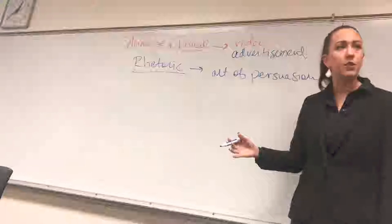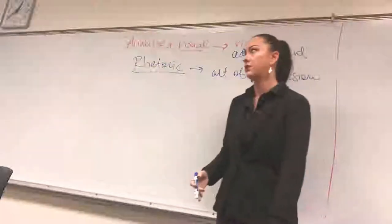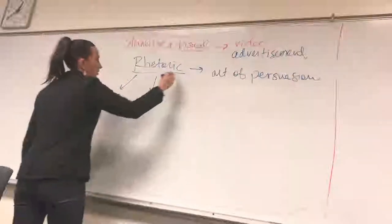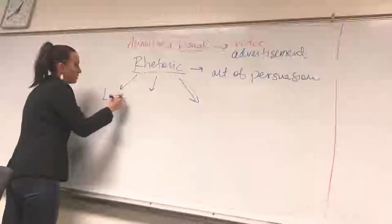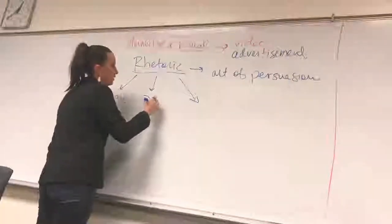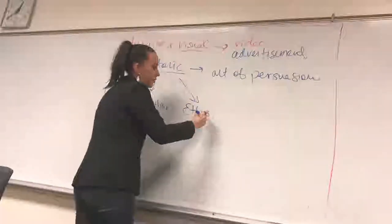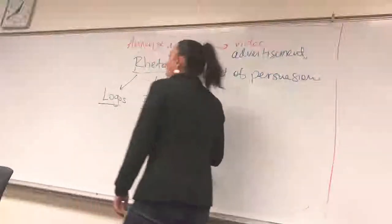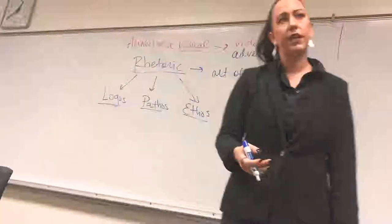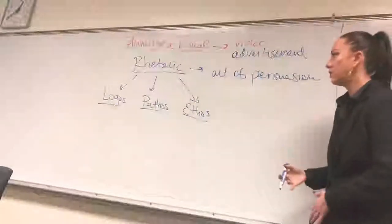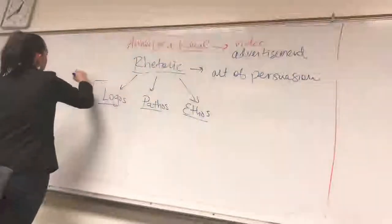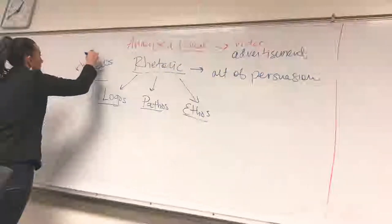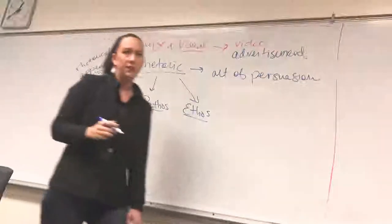There are three appeals as part of rhetoric, and these are the things you're going to look for when analyzing the advertisement. We have logos, ethos, and pathos. Have any of you heard of these before? The '-os' on the end means they're Greek words. You want to remember that these are the rhetorical appeals within a text.